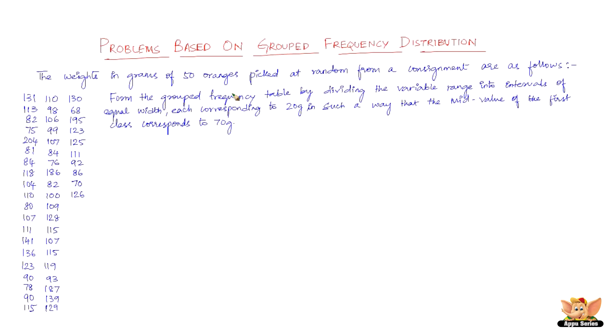Form the grouped frequency table by dividing the variable range into intervals of equal width, each corresponding to 20 grams, in such a way that the mid-value of the first class corresponds to 70 grams.